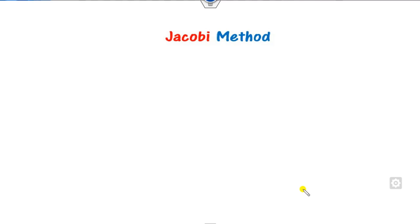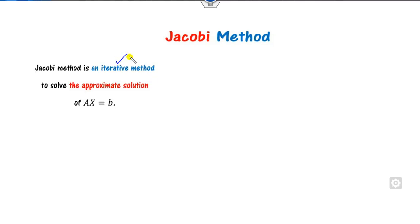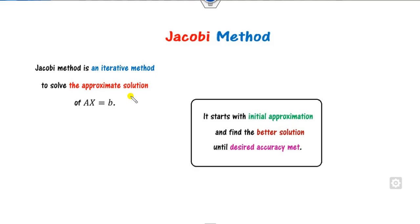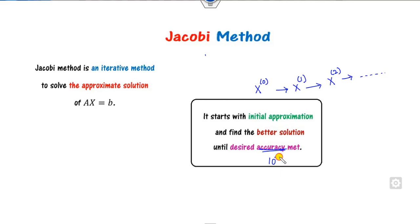Once the matrix is diagonally dominant, we can apply the Jacobi method. The Jacobi method is an iterative method for finding the approximate solution of AX = B. We start with the initial approximation X₀, find the updated value X₁, then X₂, and so on, until the desired accuracy — such as 10⁻³ or four decimal places — is met.